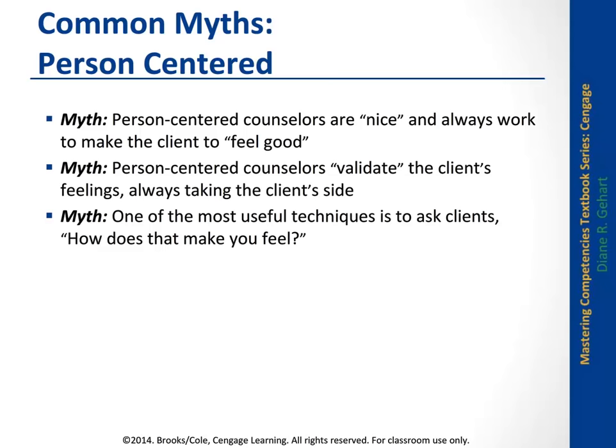The only other variable accounting for more is 40% of outcome variance: client factors such as severity, motivation, and resources. Therapists can help activate some of that, but don't have full control over it. The other two common factors are the interventions themselves and inspiring hope, each approximately 15%. But the variable therapists have the most control over with the biggest impact on whether therapy is successful is the quality of the therapeutic relationship.